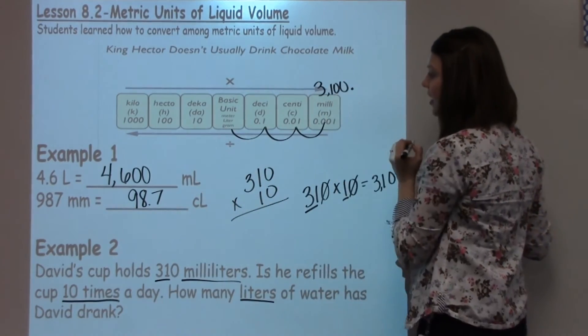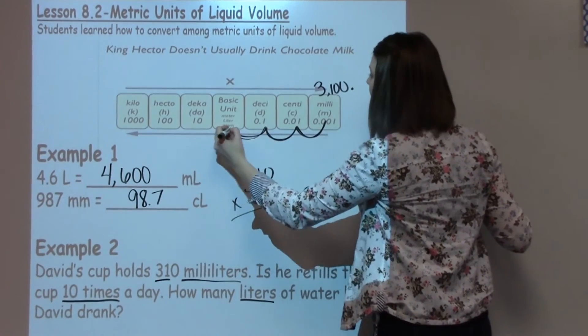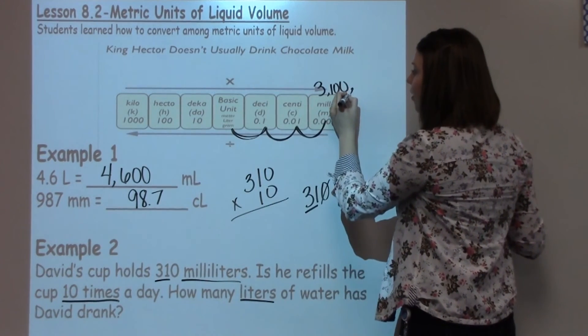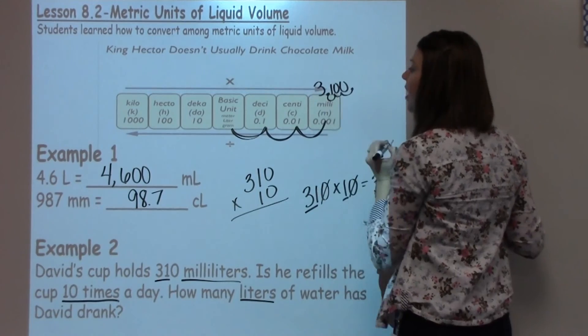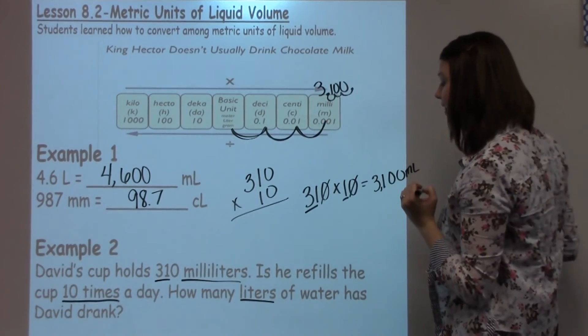So I'm going to be working my decimal into my number. Again, here's my imaginary decimal. I need to go 1, 2, 3 hops. So when I look at my number, 1, 2, 3 hops. My answer becomes 3 and 1 tenth liter.